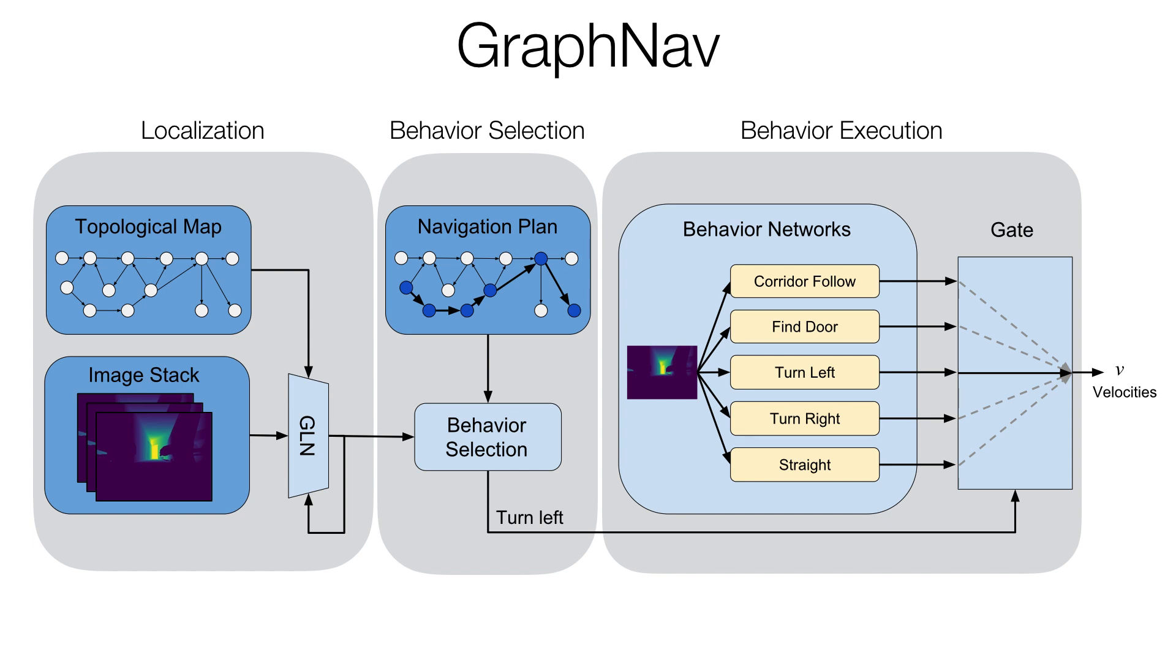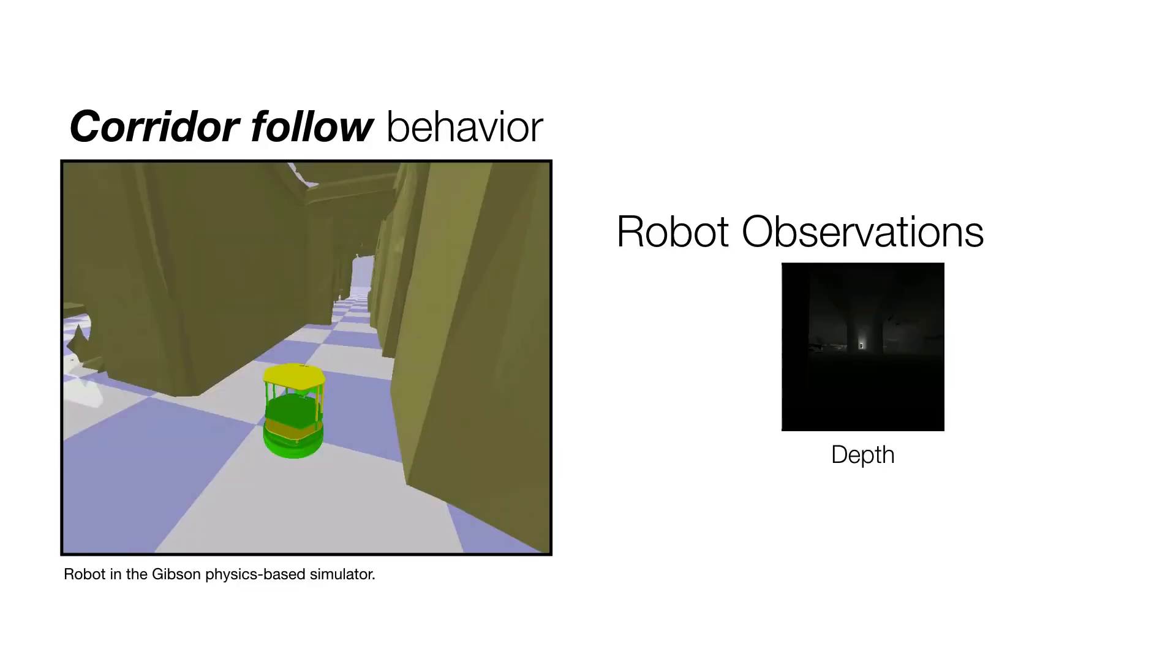We now detail these networks. The image on the left shows the TurtleBot robot that we use in our work in the Gibson physics-based simulator. On the right, the observations that the robot has available to it are depicted.